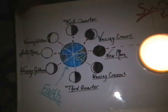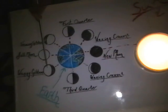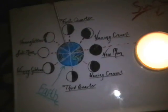This is a waning gibbous. This occurs when the sun, the earth, and the moon create an obtuse angle.